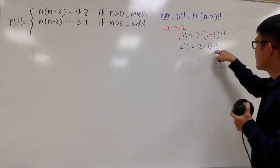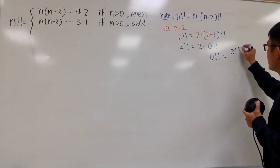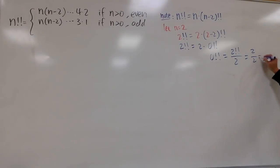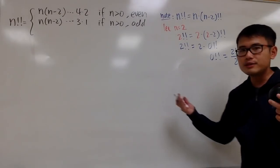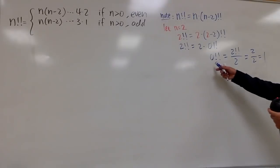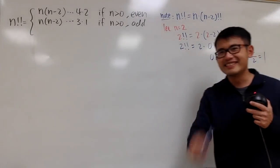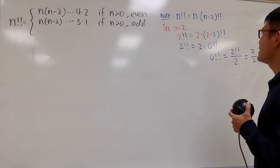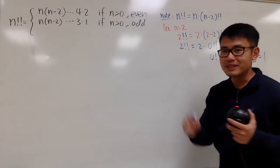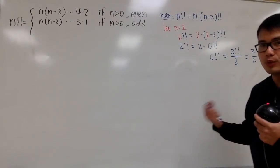You can see that 0 double factorial is just going to be 2 double factorial over regular 2. And 2 double factorial is just 2 over this 2, which is 1, right? So, as we can see, 0 double factorial should be equal to 1. And, in fact, I can also tell you if you plug in n equal to 1, you can work this out — you will get negative 1 double factorial, and this will also suggest that that should be equal to 1 as well.